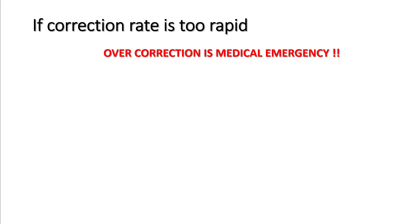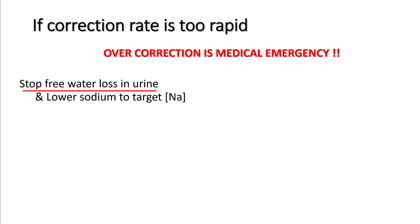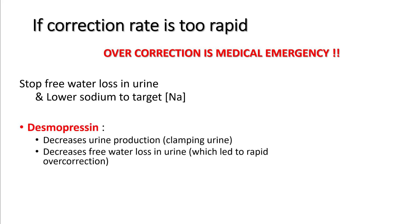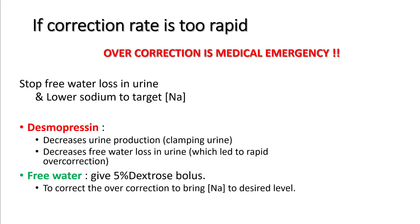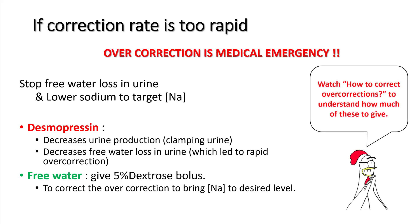If the correction rate is too rapid, this is a medical emergency. Stop the free water losses in urine and lower the sodium back to your target. For this, use desmopressin. Desmopressin decreases urine output by decreasing free water loss in the urine — some call this 'clamping' of urine. Along with it, give free water in the form of 5% dextrose bolus to bring sodium back to the desired level. I have discussed how much of these to give in a separate lecture on correcting over-correction in hyponatremia.